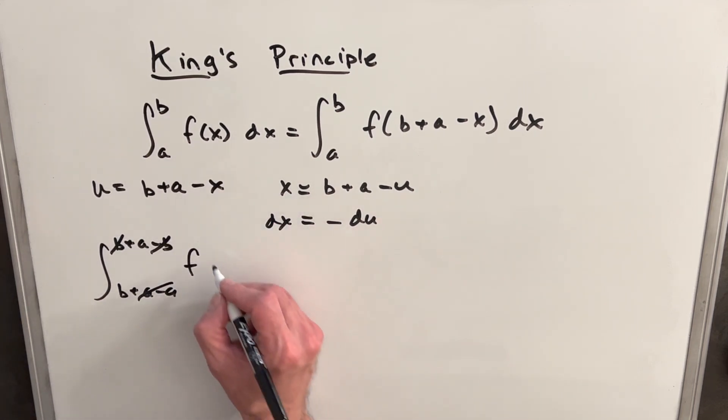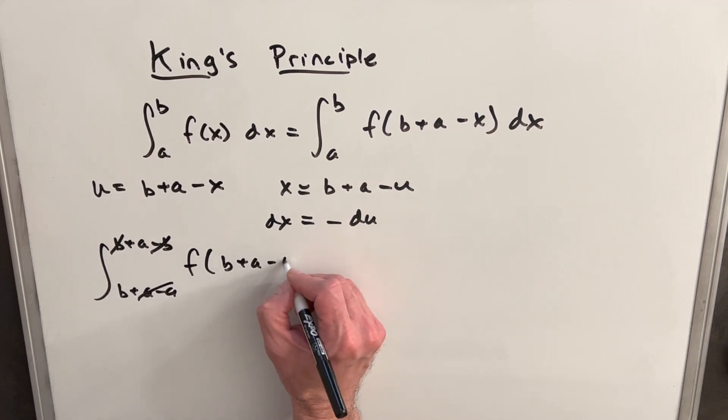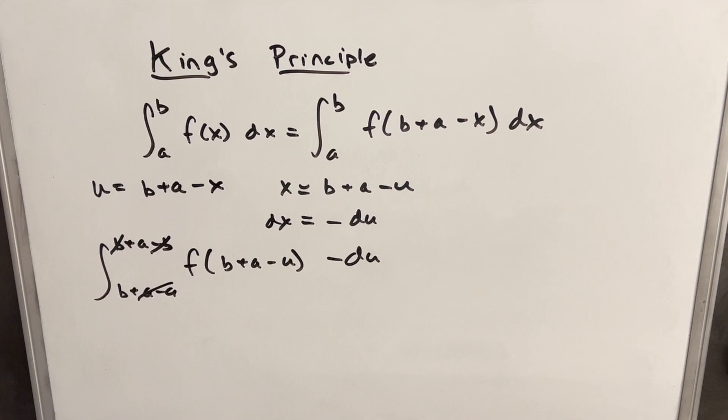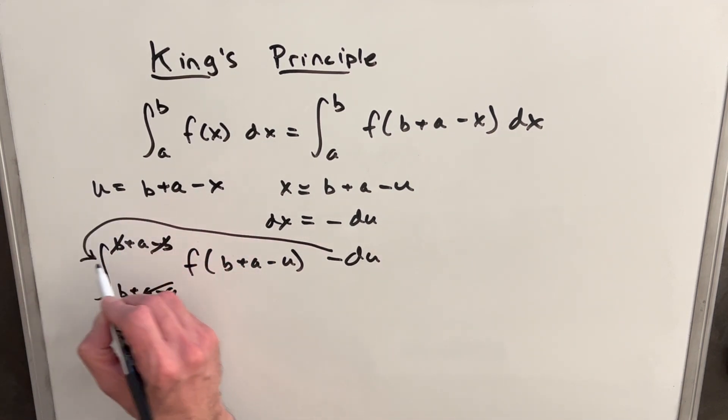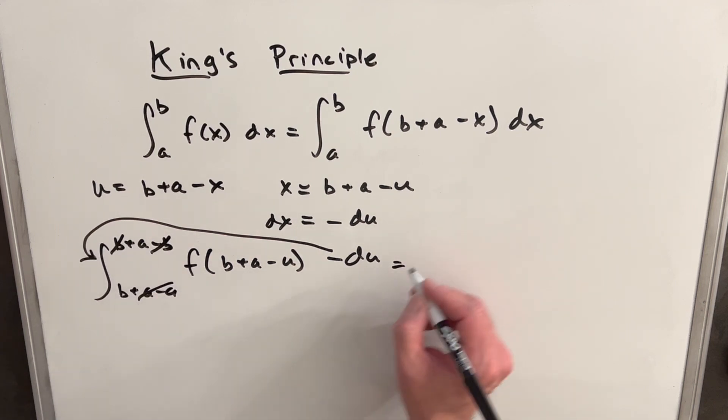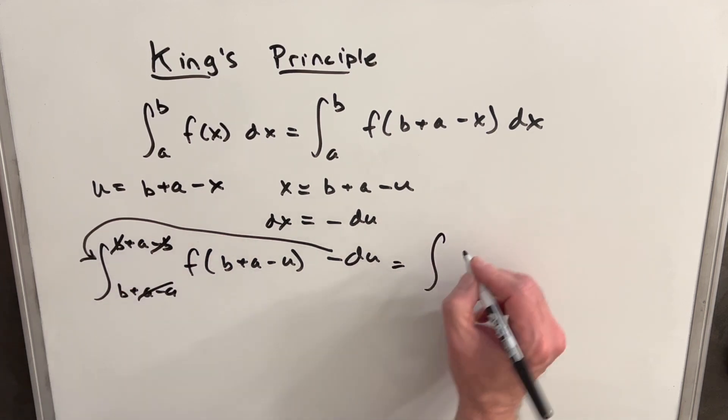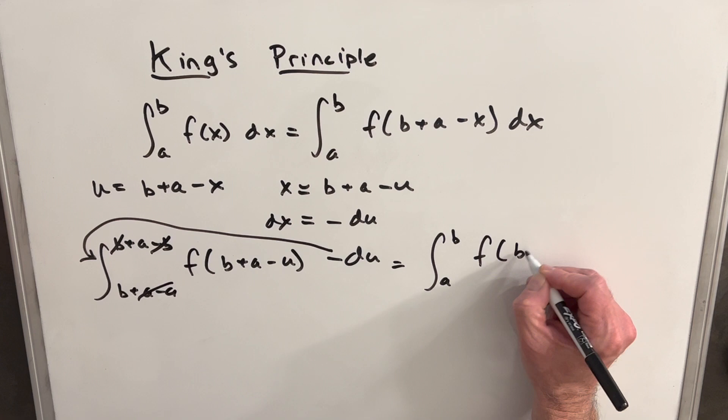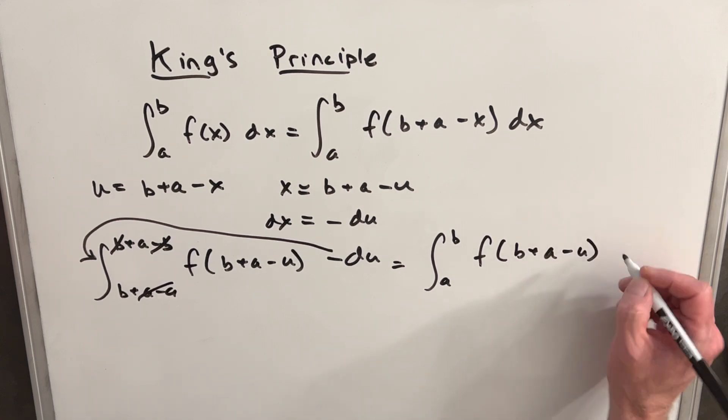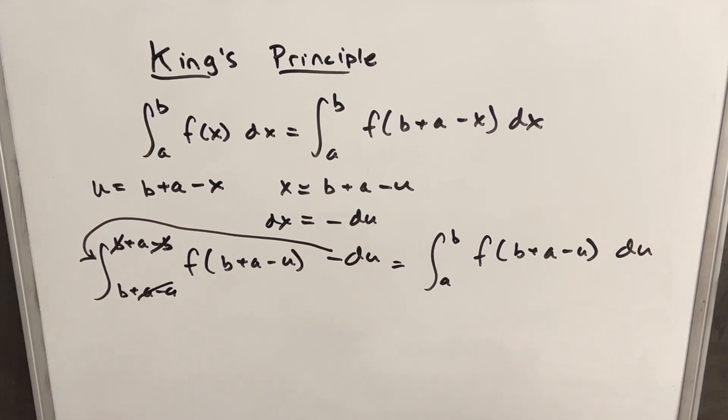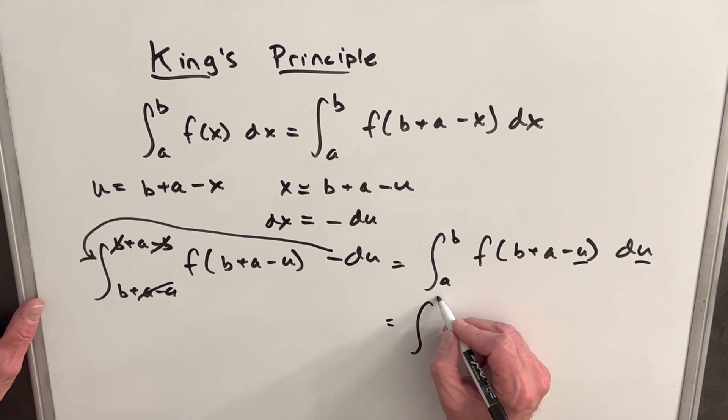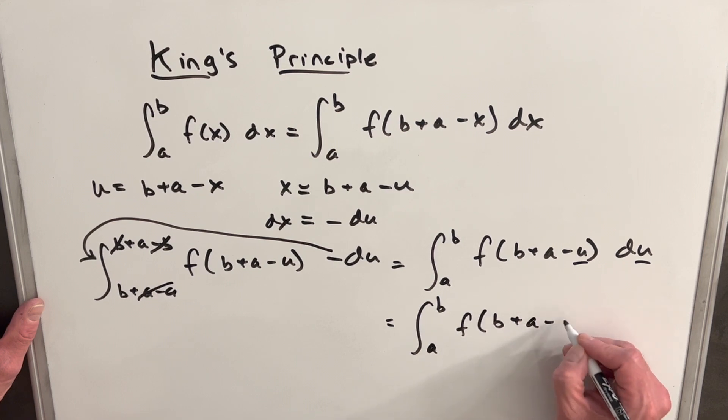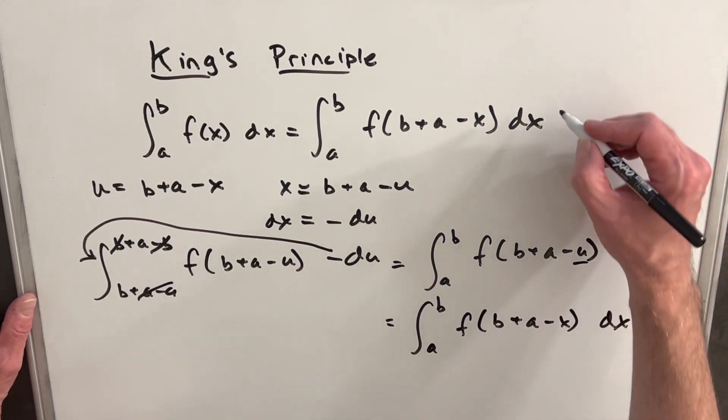Then f, we'll plug in our x value, which is b + a - u, and then we're going to have our minus du. But then what I can do is take this negative sign out front and use it to swap our limits on the integration. So instead of having a to b, we're going to have b to a, and we'll remove our minus sign. So then we'll just keep our f(b + a - u) du. But then because it's a definite integral, we can take our variable u and just make it an x, because in a definite integral, the variable name doesn't matter. It's not going to change the value. So we can write this as f(b + a - x) dx, and that's what we wanted to prove.